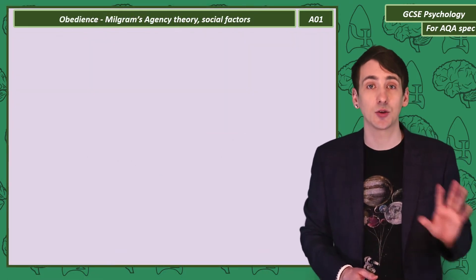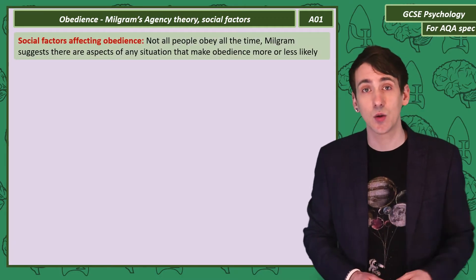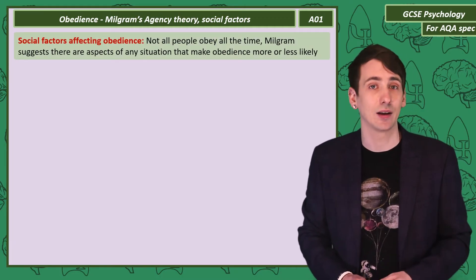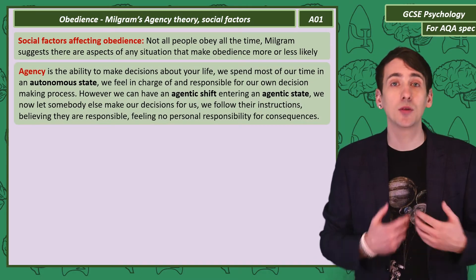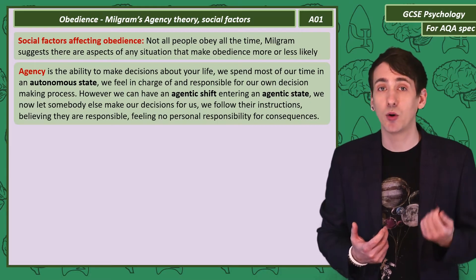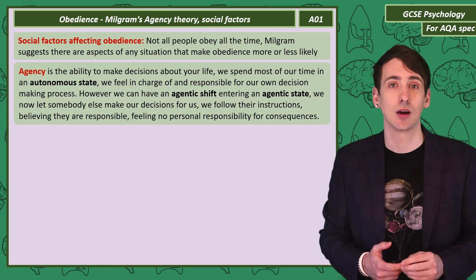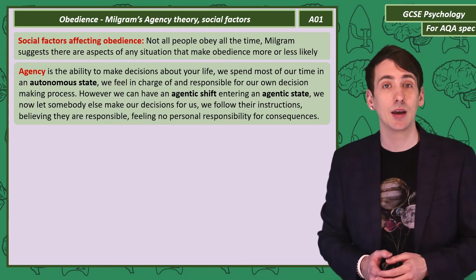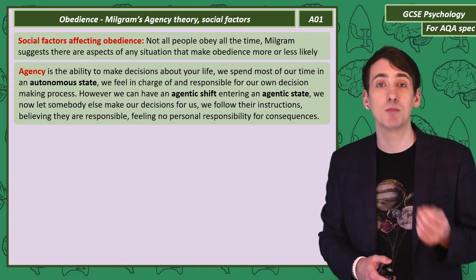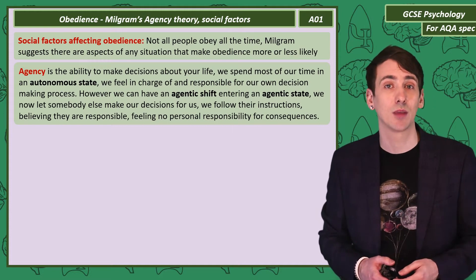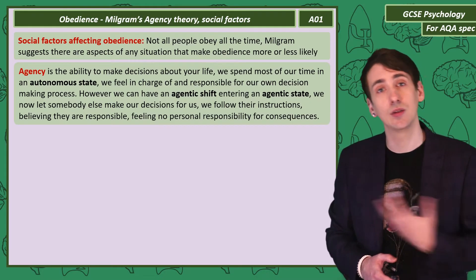Milgram thought we all had the potential to be obedient, but there were social factors — aspects of the situation — that made obedience more or less likely. We spend most of our time in an autonomous state, which means we feel in charge and, more importantly, responsible for our decisions. But we can give up our agency through something called an agentic shift. If this happens, we are in an agentic state and we allow the authority figure to make our decisions for us. We follow their orders, and the responsibility we felt for our actions switches to them.